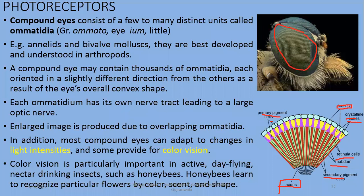Most compound eyes can adapt to changes in light intensity, and some provide for color vision. Color vision is particularly important in active day-flying, nectar-drinking insects such as honeybees. Honeybees learn to recognize particular flowers by their color, smell, as well as their shape.